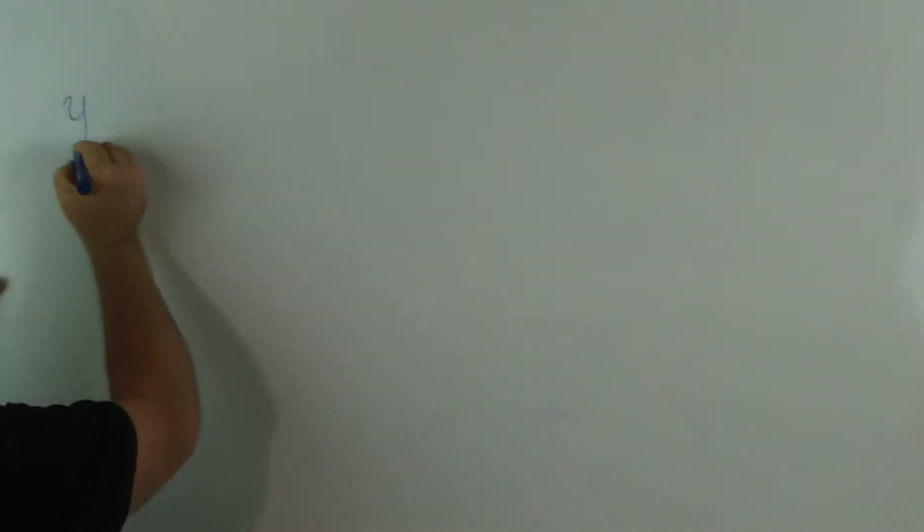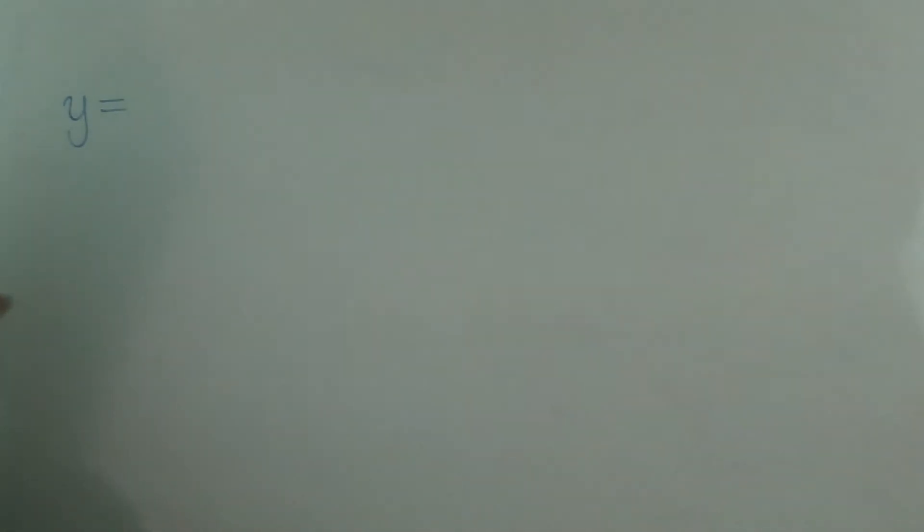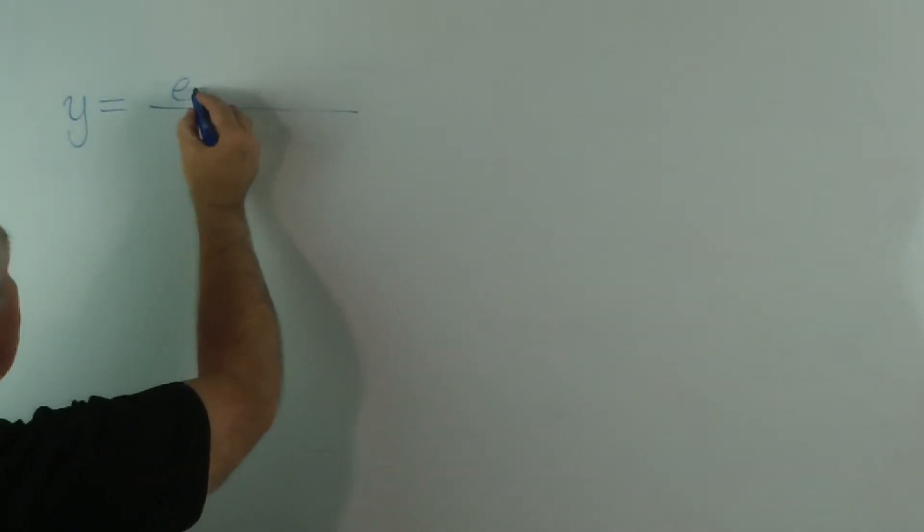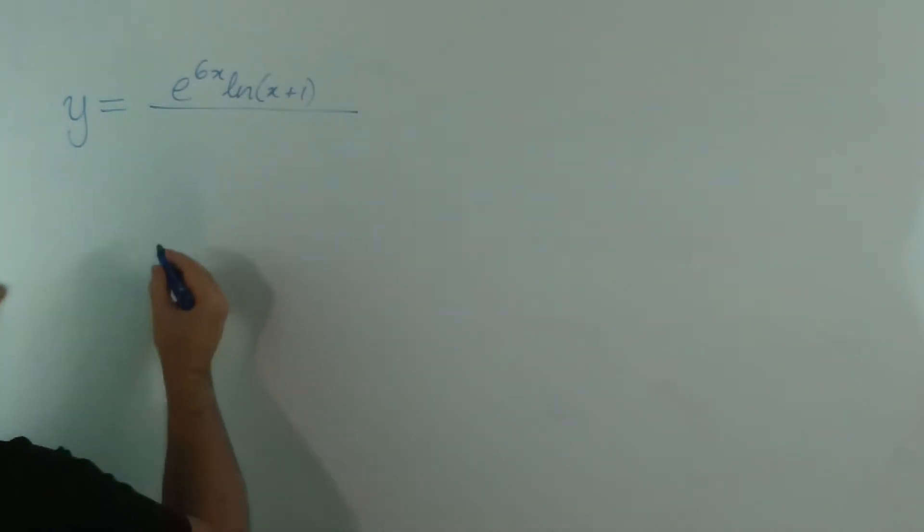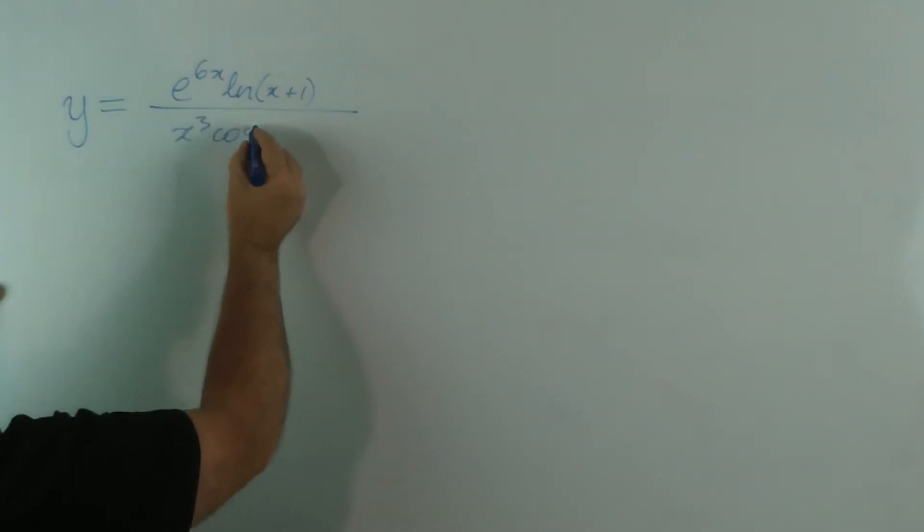So, without wasting time, let's see how the structure helps. I'm going to create a compound function here with a product on the top. Let's make it e to the 6x log(x+1) and something fairly complicated on the bottom, like x³cos⁵(7x).